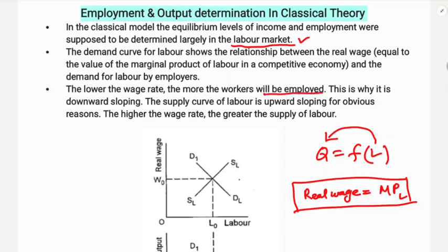Lower the wage rate, the more workers will be employed. This is why the labor demand curve is downward sloping. The supply curve of labor is upward sloping for obvious reasons: the higher the wage rate, the greater the supply of labor.